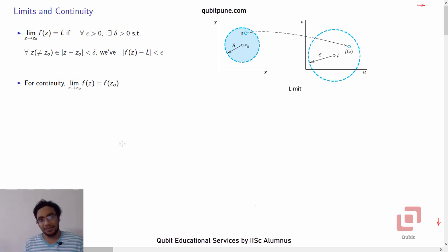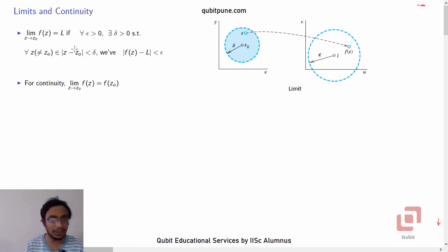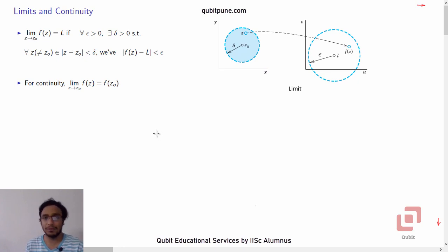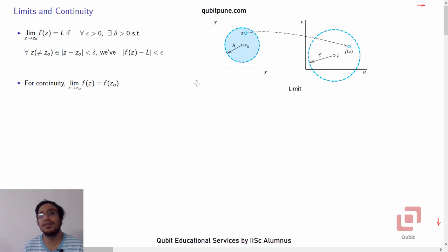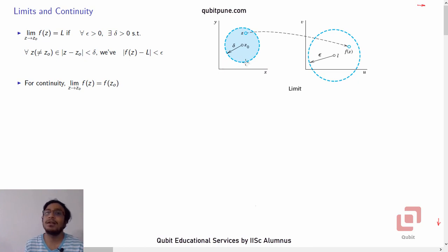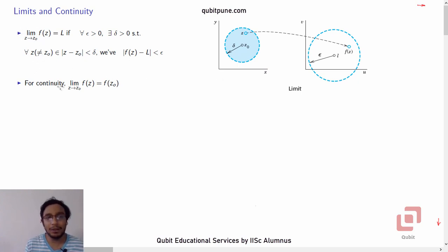The first two concepts we are going to see today are limit of a function and continuity. The epsilon-delta definition that you already know of the limit of a function, we are going to extend it to complex numbers. But this time, we will not be considering intervals on the x-axis — instead, we will talk about neighborhoods, treating them to be circular regions.